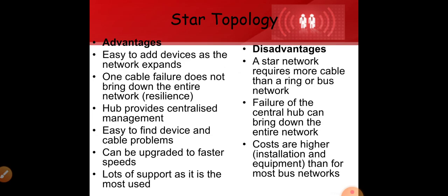Advantages of star topology: it is easy to add devices as the network expands; one cable failure does not bring down the entire network; the hub provides centralized management of all connected systems; it is easy to find device and cable problems — we can easily identify which specific computer system has an issue while the rest work fine; and it can be upgraded to faster speeds easily. It also has wide vendor support as it is the most commonly used topology.